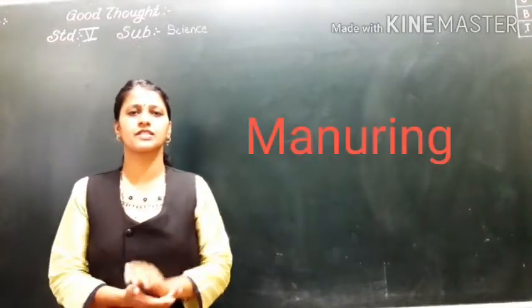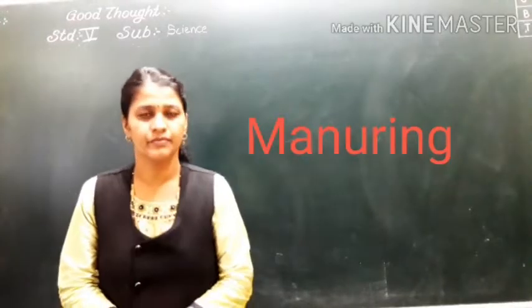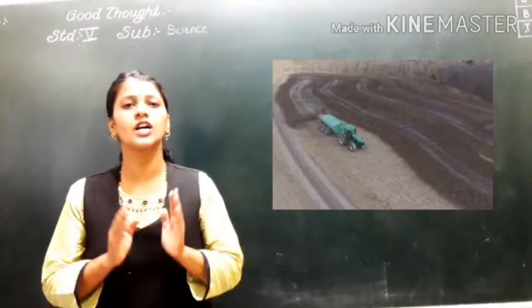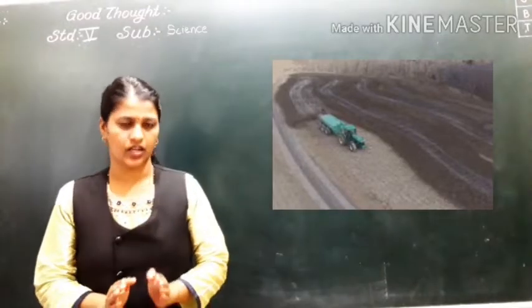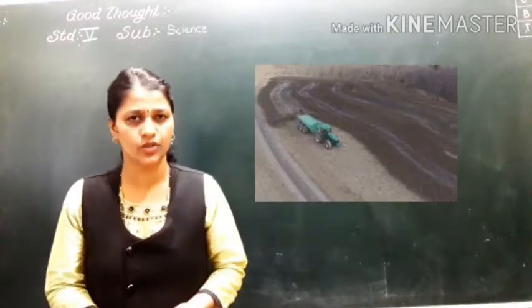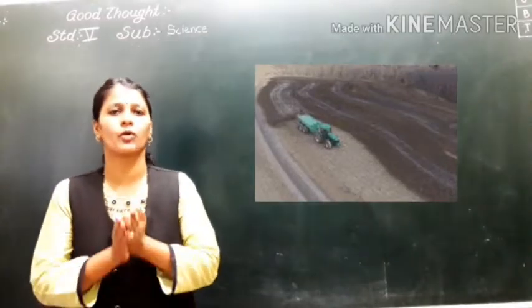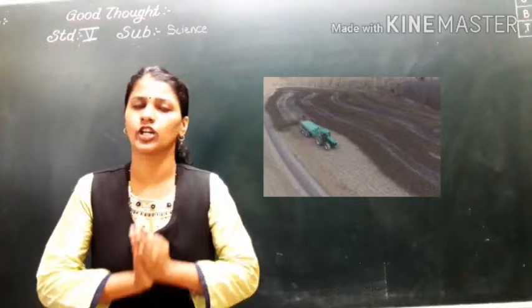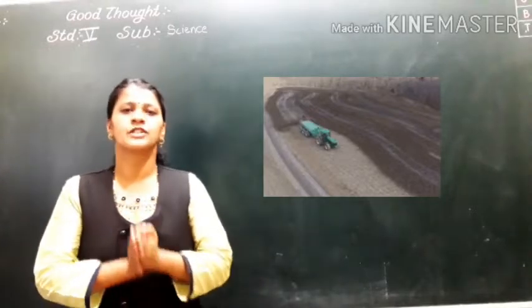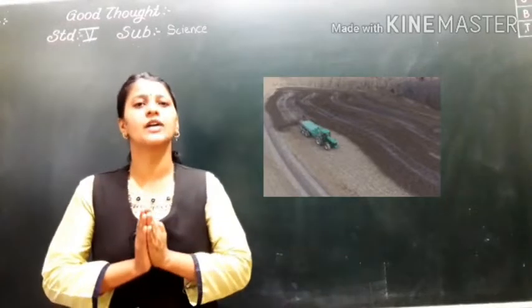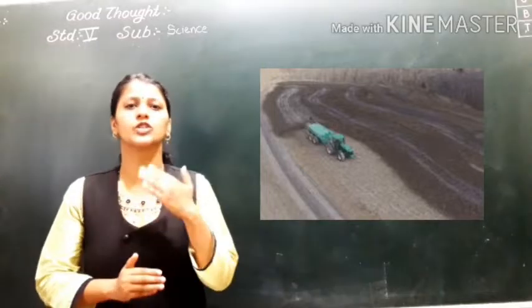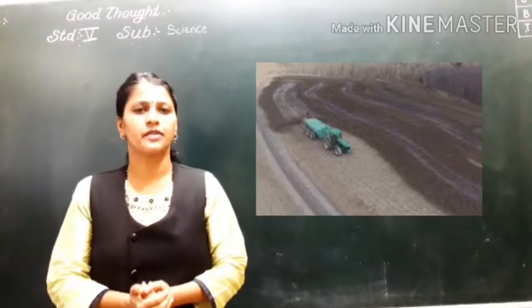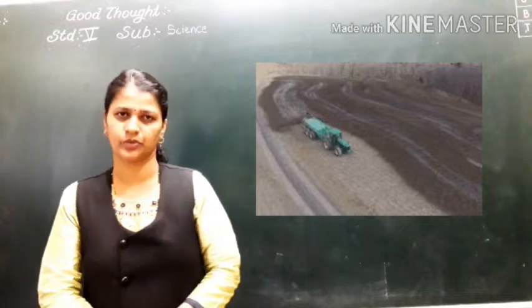The second process is manuring. You have to give proper nutrients to the soil. As you give nutrients to the soil, those nutrients will be provided to the plants and to that particular crop. That process of adding nutrients to the soil is called manuring.